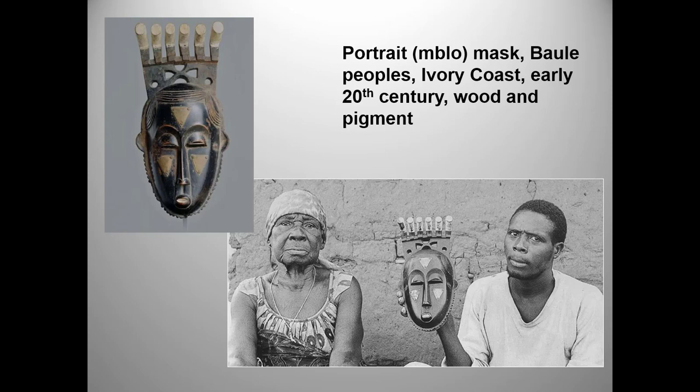M'Blo masks appeared in the final sequence of large-scale public festivals known as M'Blo. M'Blo performances consist of a succession of dances that culminate in tributes to the community's most distinguished members. Individuals honored in this way are depicted by a mask that is conceived of as their artistic double or namesake. The masks themselves, however, are highly stylized — they aren't intended to represent the honoree's appearance.